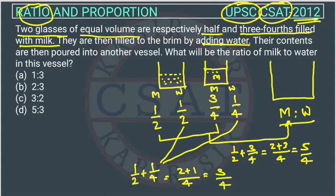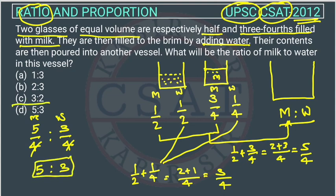So what will be the ratio? The ratio in the new vessel is 5 by 4 for milk and 3 by 4 for water. This 4 will cancel this 4. So what is the ratio? 5 is to 3. So the answer is option D.